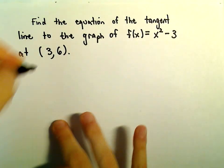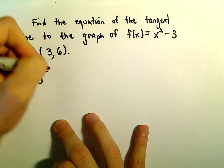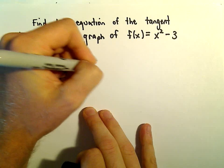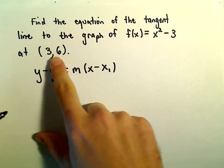To do this, we can use the point-slope formula: y - y₁ = m(x - x₁).